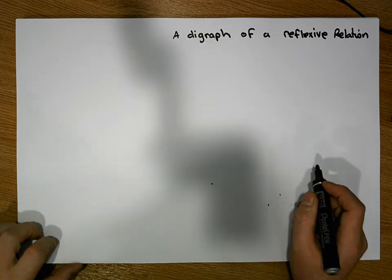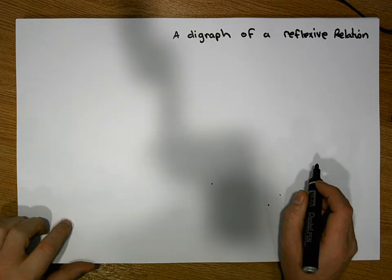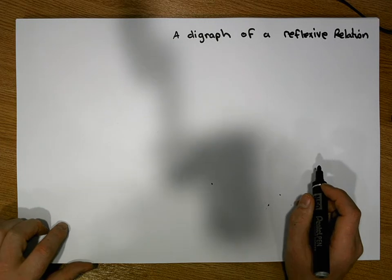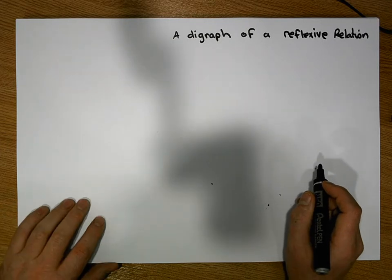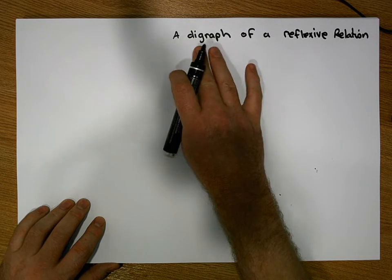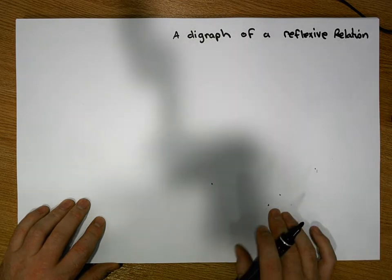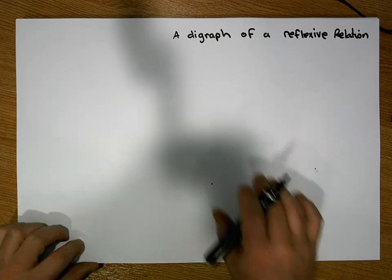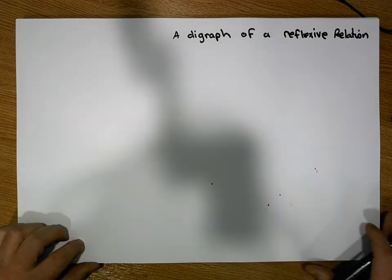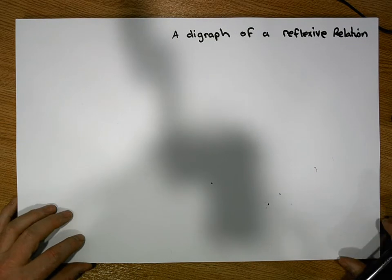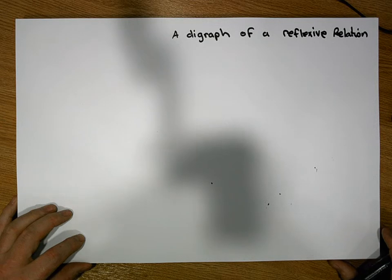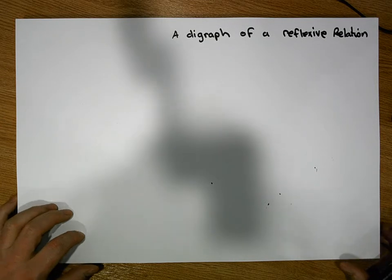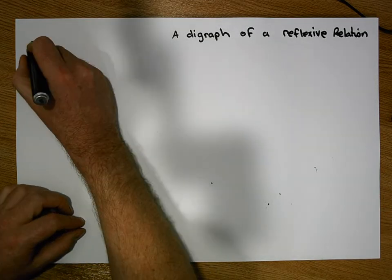Hi guys, my name is Jonathan Lambert with the Mathematics Development and Support Service at the National College of Ireland. This short video is going to explore what a digraph is, or what a digraph of a reflexive relation looks like. What we need to do first, like in all videos, is create a relation. A relation is built on a particular set, and in particular a relation is a subset of a particular cross product.